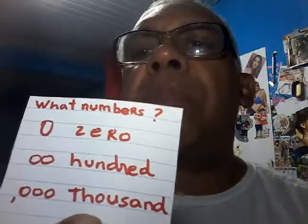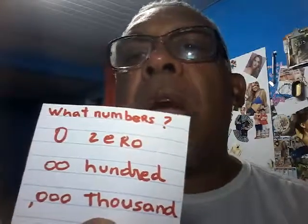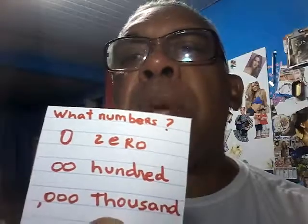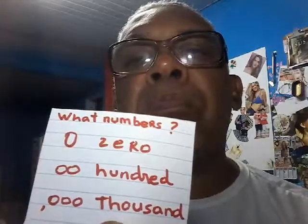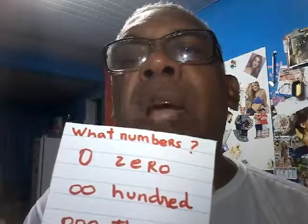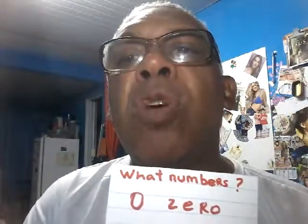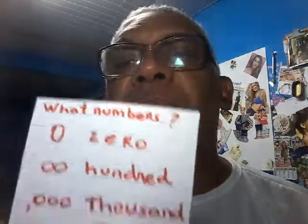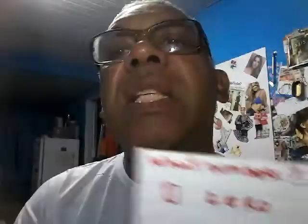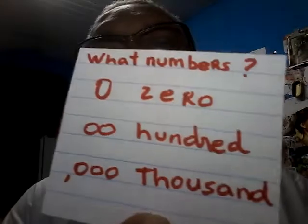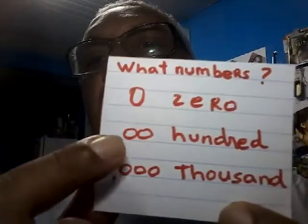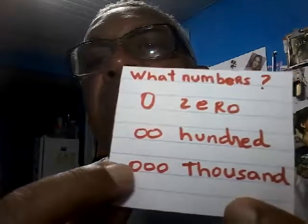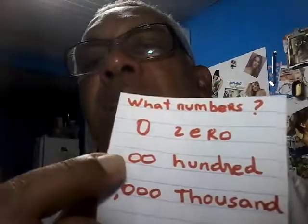What numbers? Zero, hundred, thousand. Let's repeat: zero — good. Zero. Hundred. Hundred. Thousand. Thousand. So: zero, hundred, thousand. Thousand, hundred, zero.